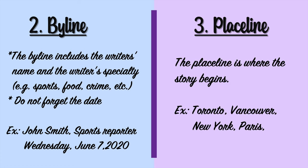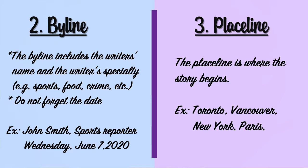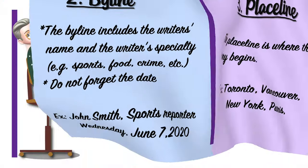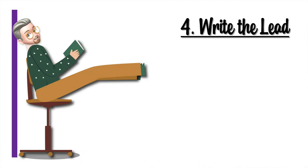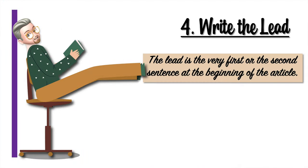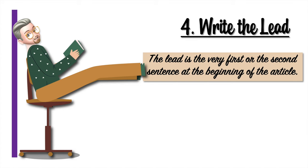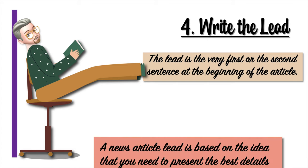The place line is where the story begins. Example: Toronto, Vancouver, New York, Paris, etc. The next step is how to write a lead.